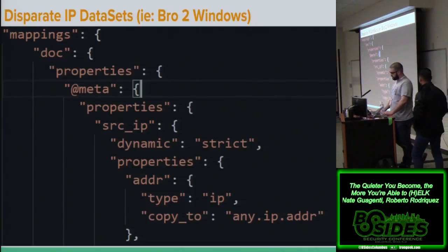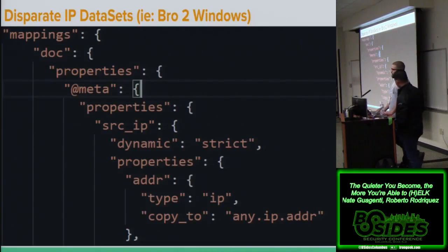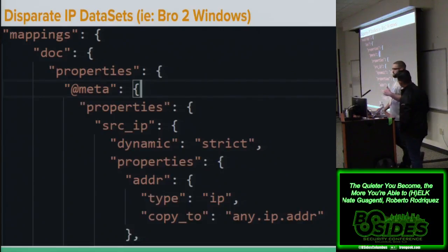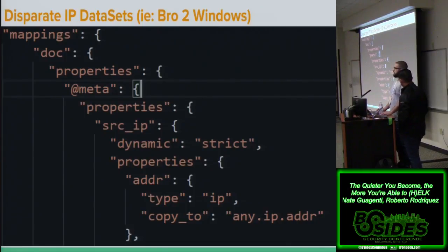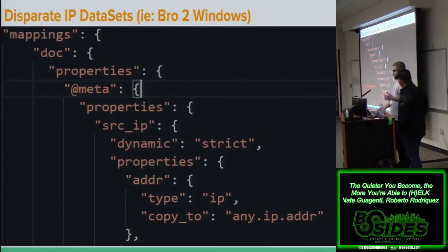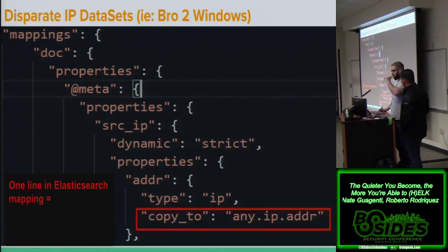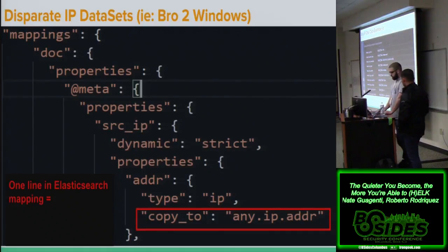We have about seven or eight different IP fields beyond source IP and destination IP — source NAT, destination NAT, and similar. Cisco ASA can sometimes have five different IP fields in one log. How do you solve the problem of being able to search all IP addresses across all logs? It's one line in the Elasticsearch mapping. I'm going to show what you can do with that.